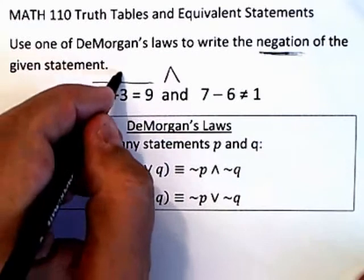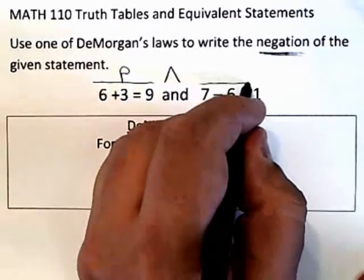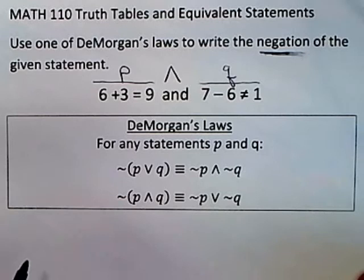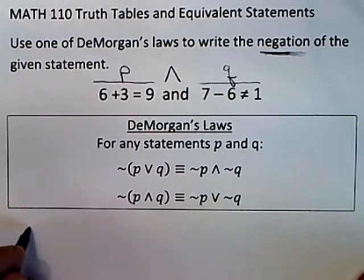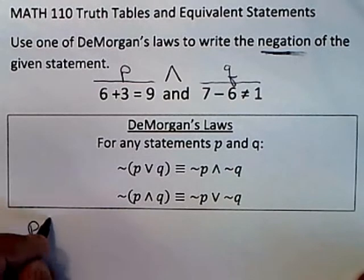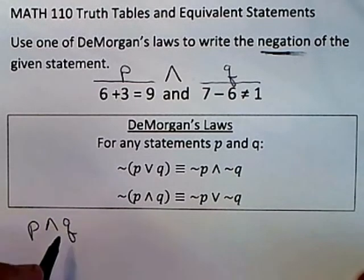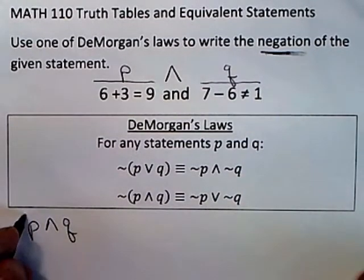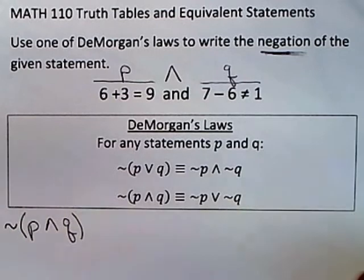And you might want to consider this to be the statement P and this to be the statement Q. So the original statement is P and Q but they're asking you to negate it. So you're taking the original statement and you're making it into a negation.